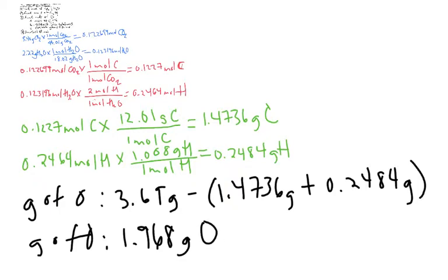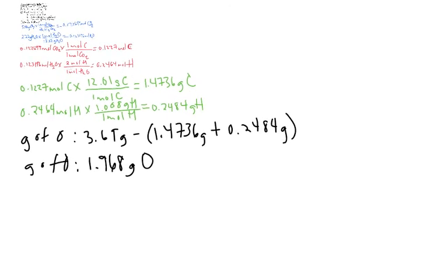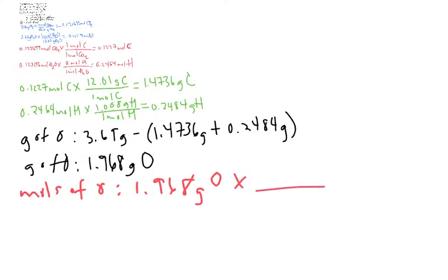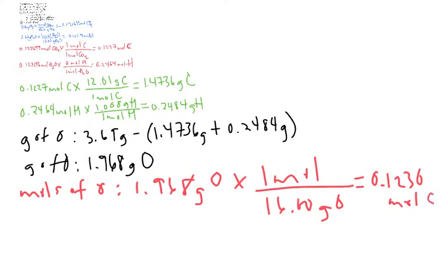Now that we have the grams of oxygen, we need to find the moles of oxygen. If we have 1.968 grams of oxygen, and for every 16 grams of oxygen there is 1 mole, this equals 0.1230 moles of oxygen.